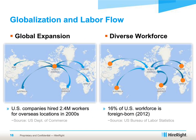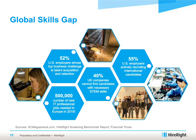To get into more detail around globalization: U.S. companies hired 2.4 million workers for overseas locations in the 2000s. Large multinational firms are now hiring more employees outside the U.S. than within. About 16% of the U.S. workforce in 2012 was foreign-born, and that's expected to grow. These trends are creating risks and challenges for employers when thinking about how to screen — both for employees hired domestically with foreign backgrounds and for employees hired directly in international markets.